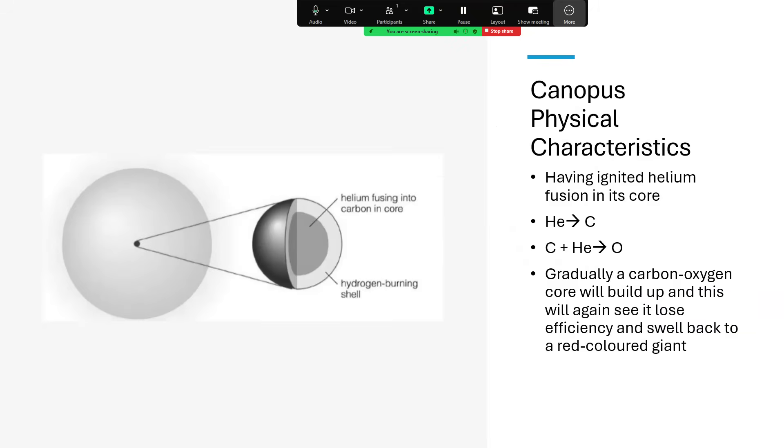Now inside it, going on right in the core, it has ignited the helium fusion process. So it's fusing helium into carbon, and then carbon plus helium goes on to make oxygen, building up a carbon-oxygen core, which is beginning to build in the center.